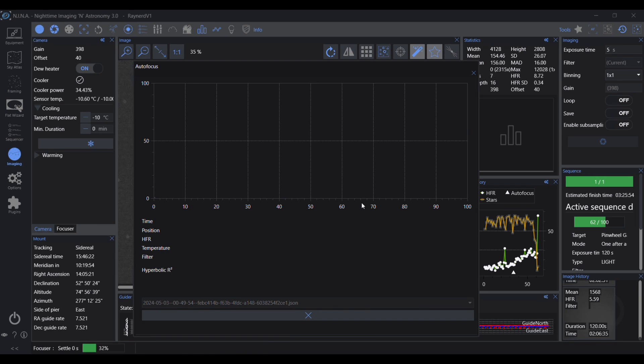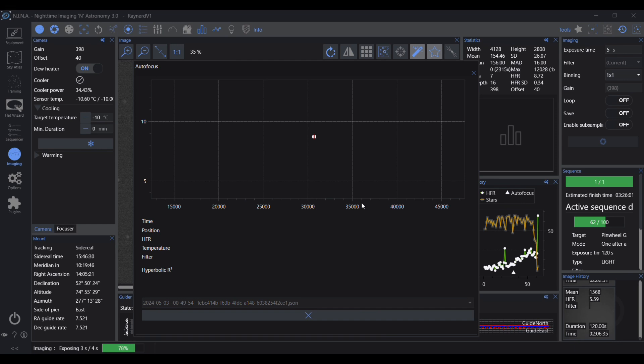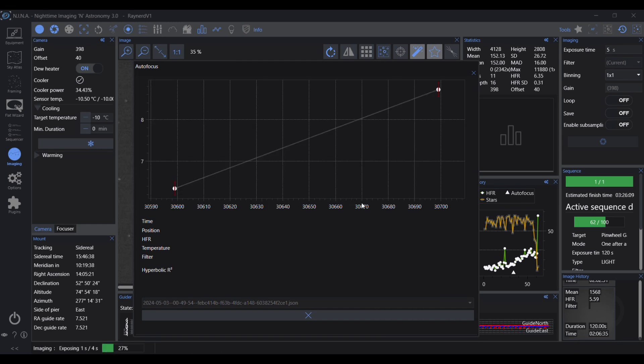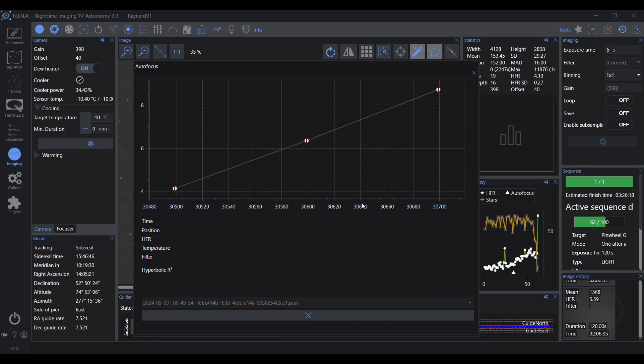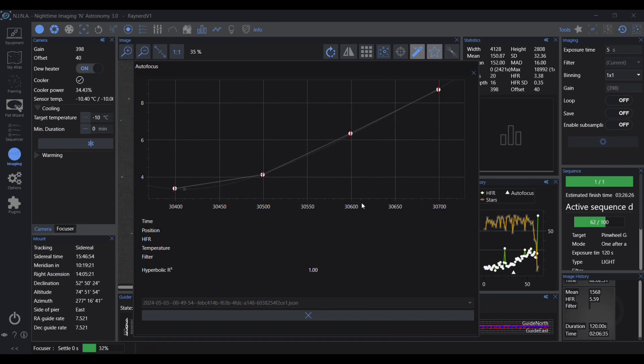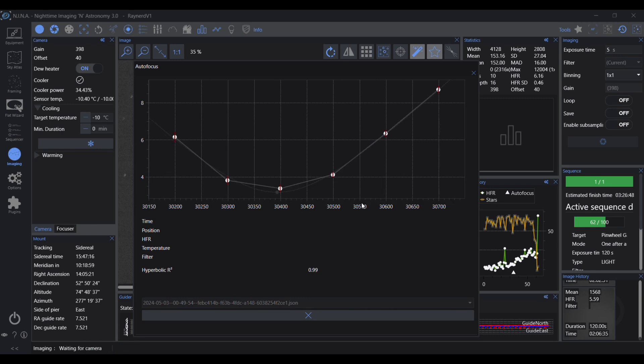So the graph is basically plotting the HFR of the stars against the focus position, and it will keep moving the focuser, calculating the HFR, and hopefully improving the HFR to a point where it will eventually, as we're getting now on this graph, to a point where actually the HFR starts to get worse.